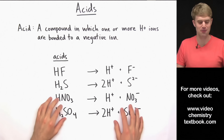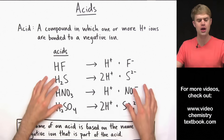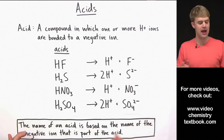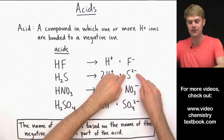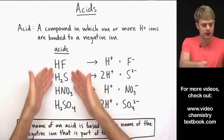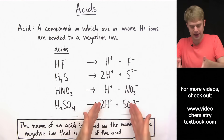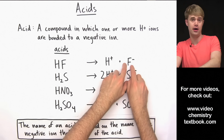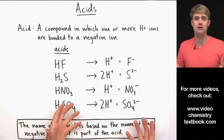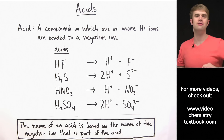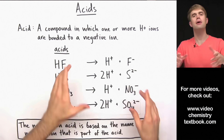Now why am I talking so much about ions if what we want to do is name acids? Well, it's for this simple reason: when we're naming an acid, the name of an acid is based on the name of the negative ion that's part of that acid. So when I look at the formula for an acid and I want to name it, I separate it into the H+ part and the negative ion part, figure out what the negative ion is, then figure out its name, and based on that name I can write the name for the acid.